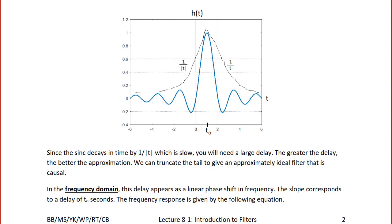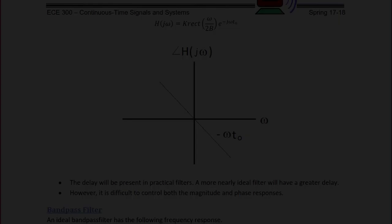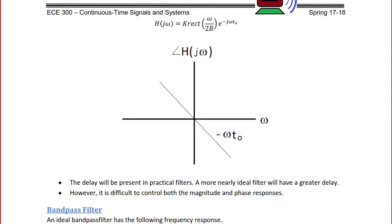In the frequency domain, this delay appears as a linear phase shift in frequency, and the slope corresponds to a delay of T0 seconds. The frequency response is now given by the following equation. H of J omega is equal to K rect of omega over 2b, e to the negative J omega T0, and here is a plot of the phase angle H of J omega with a slope of negative omega T0. The delay will be present in practical filters. A more nearly ideal filter will have a greater delay.